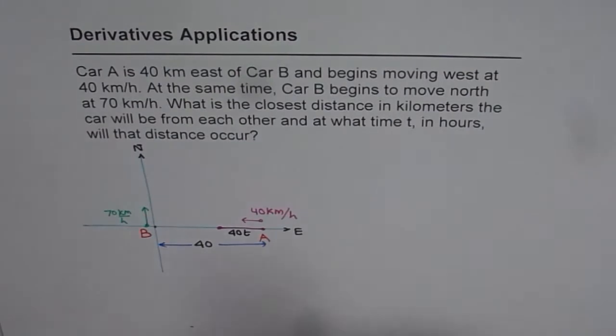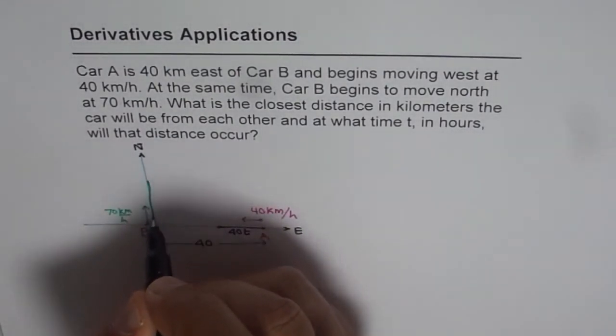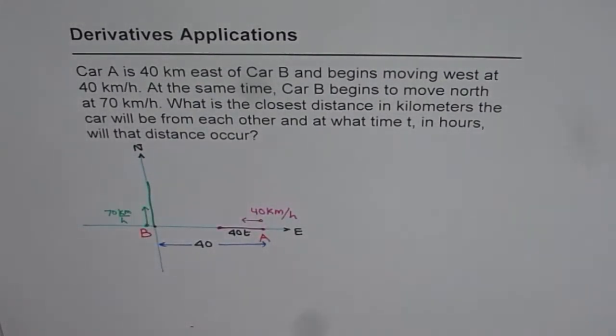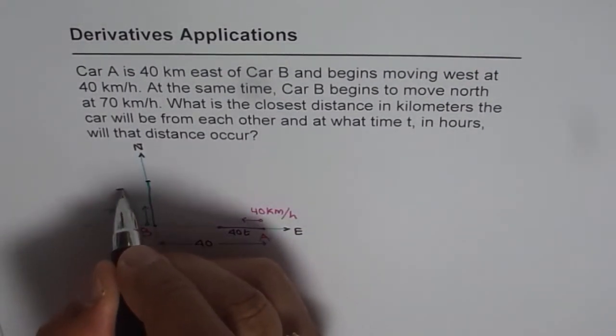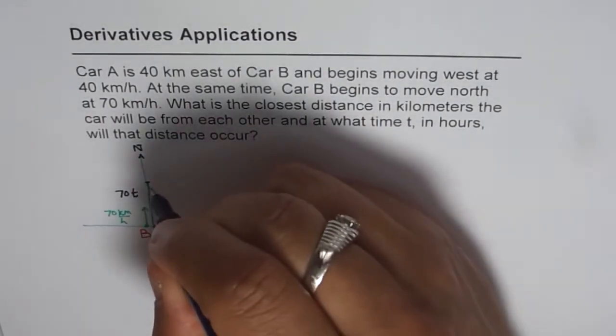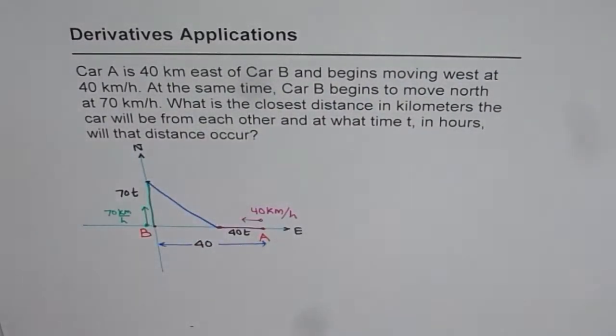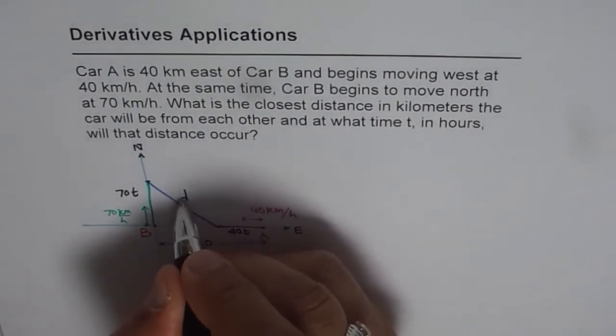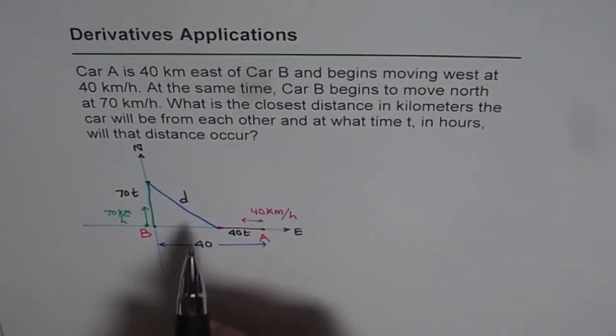How about car B? Car B will travel 70T. So it will travel up to here. So let us say at time T, car B reaches here. So this distance will be 70T. And distance between these two cars is going to be how much? So it is going to be this distance. Diagonal distance between these two points. We are interested in finding this distance between the cars at any distance of time T. And we need to find when is it shortest.